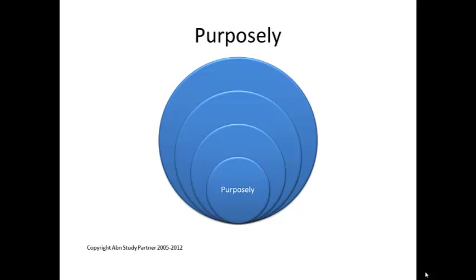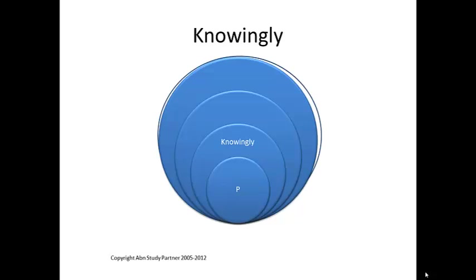That's the first circle. Now draw a slightly bigger circle around it, and just below the P, inside that second circle but outside the first, draw a K for Knowingly. Knowingly means a substantial certainty that something is going to occur. For example, terrorists saying to the jury: all we intended to do was blow up the airplane. We set the bomb for four hours and the airplane usually stays at the hangar overnight. How were we to know it would be used as an emergency flight with 150 people, and four hours later when the bomb goes off, they'd all die? That's the substantial certainty — when a bomb goes off on an airplane in the air, people are going to die. That's pretty solid substantial certainty. So that's knowingly.